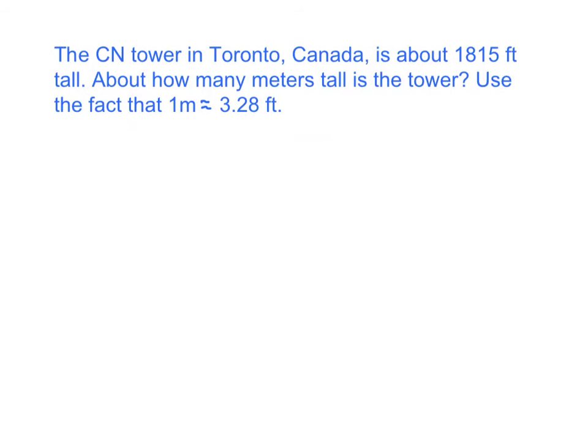The CN Tower in Toronto, Canada is about 1,815 feet tall. About how many meters tall is the tower? Use the fact that one meter is approximately 3.28 feet. You will notice that we have two systems here. Two systems of units. We have feet and we have meters. So we have to start with 1,815 feet.